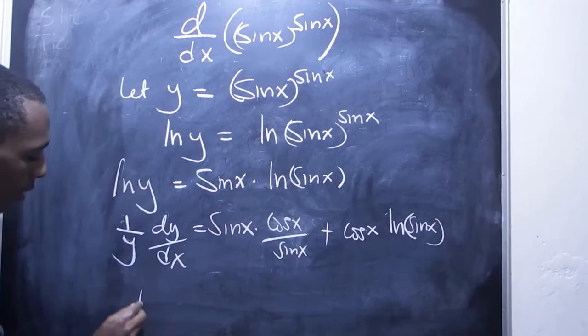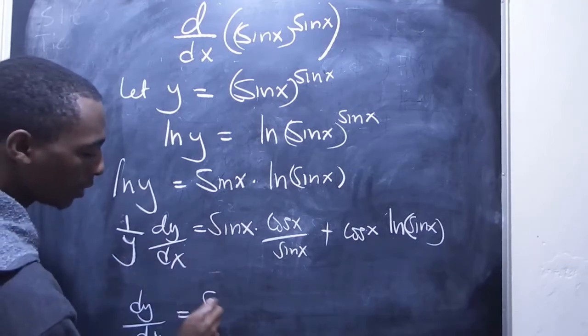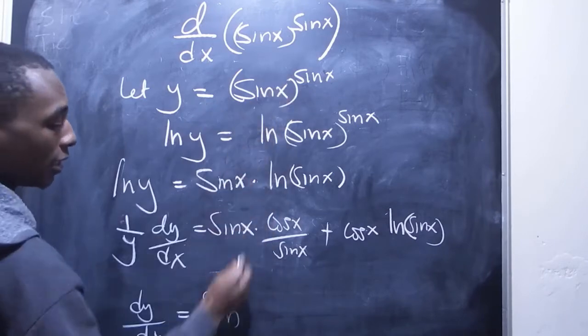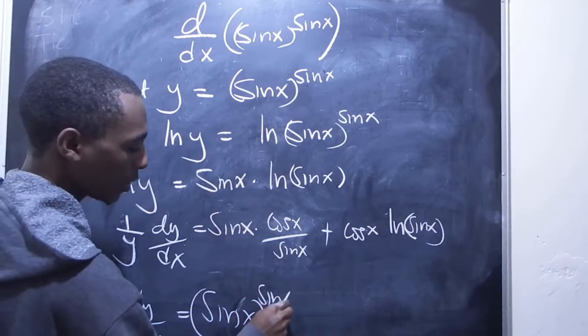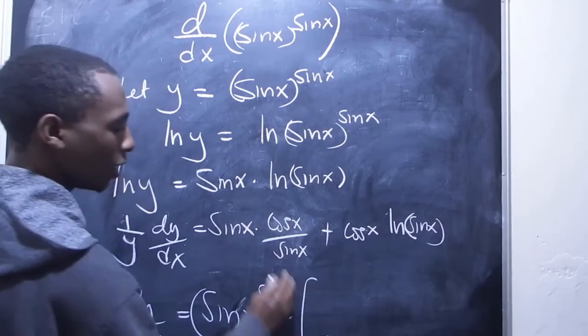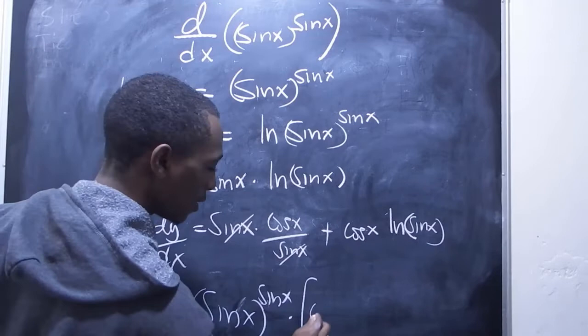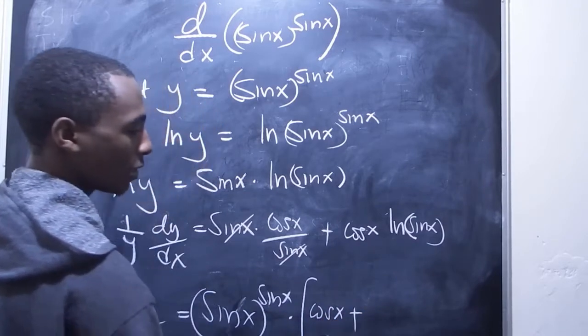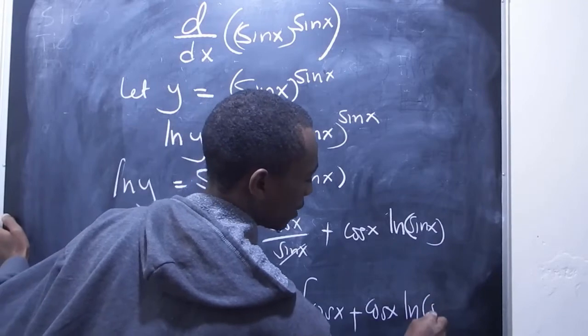And so finally, I get this y, multiply it here. So y is sine x, sine x to the power sine x times everything here. So this cancels with this. We have cos x plus cos x natural log sine x.